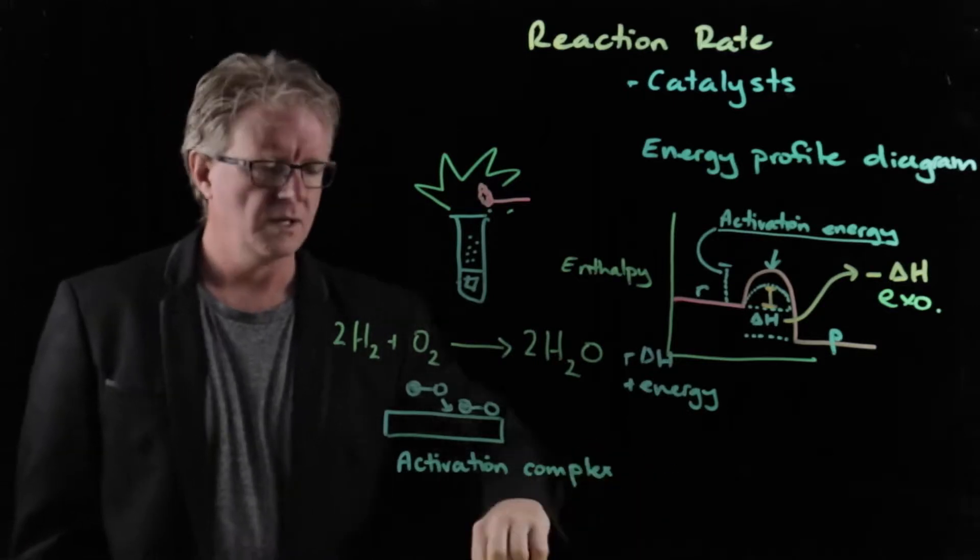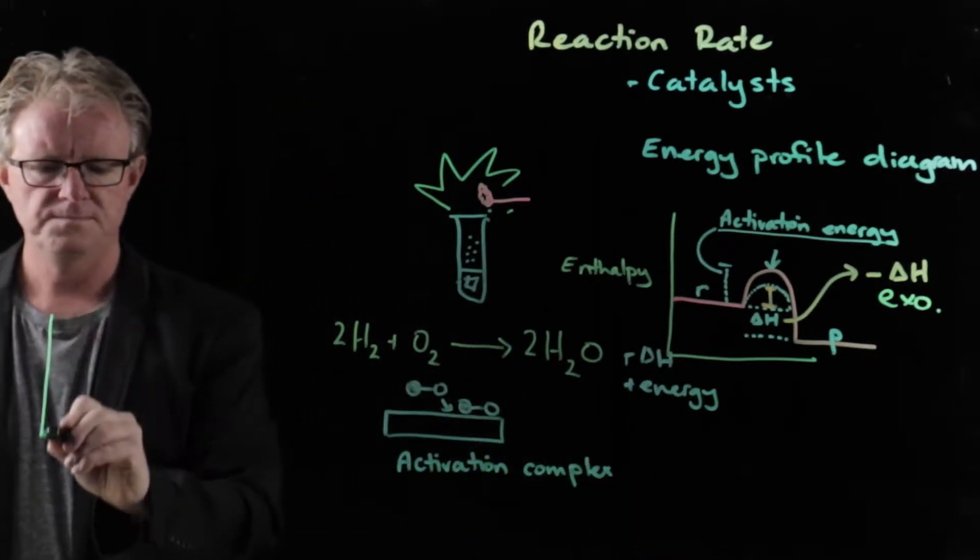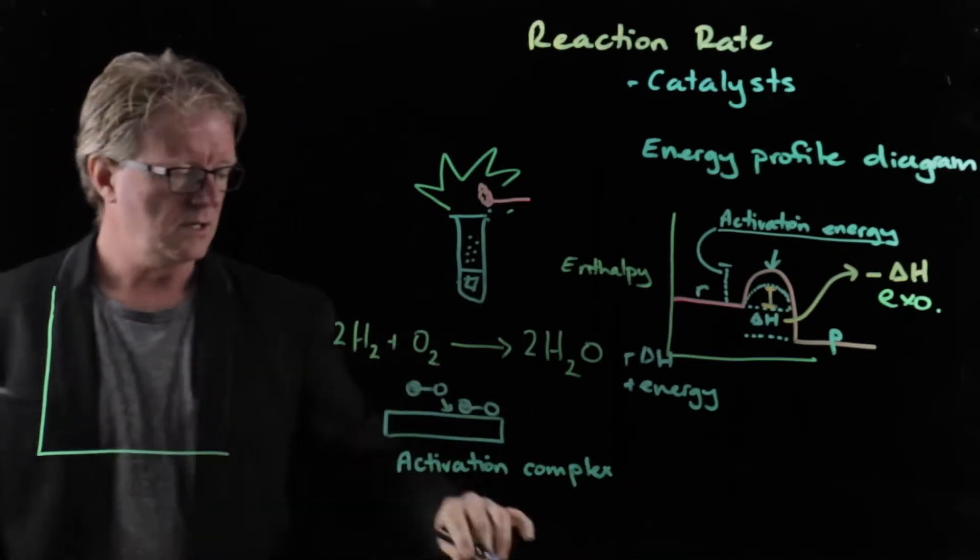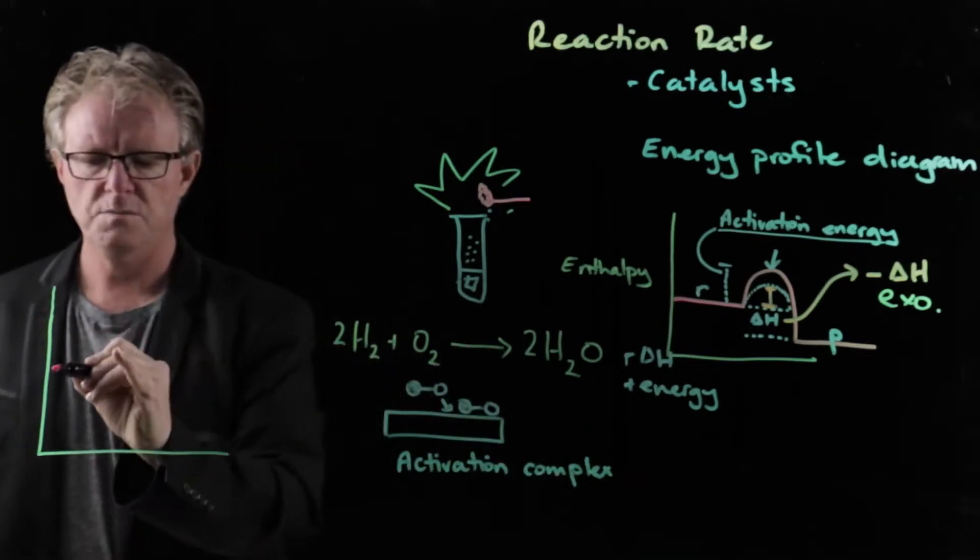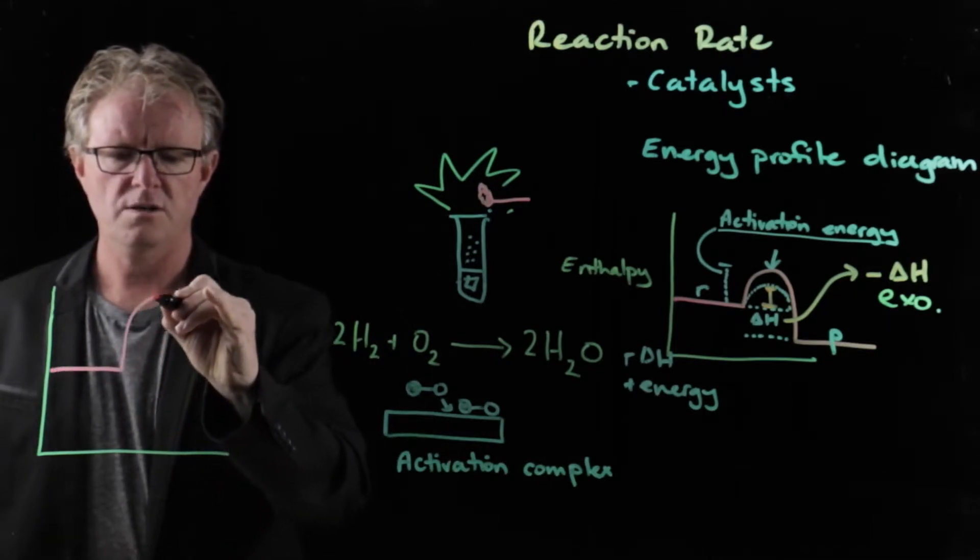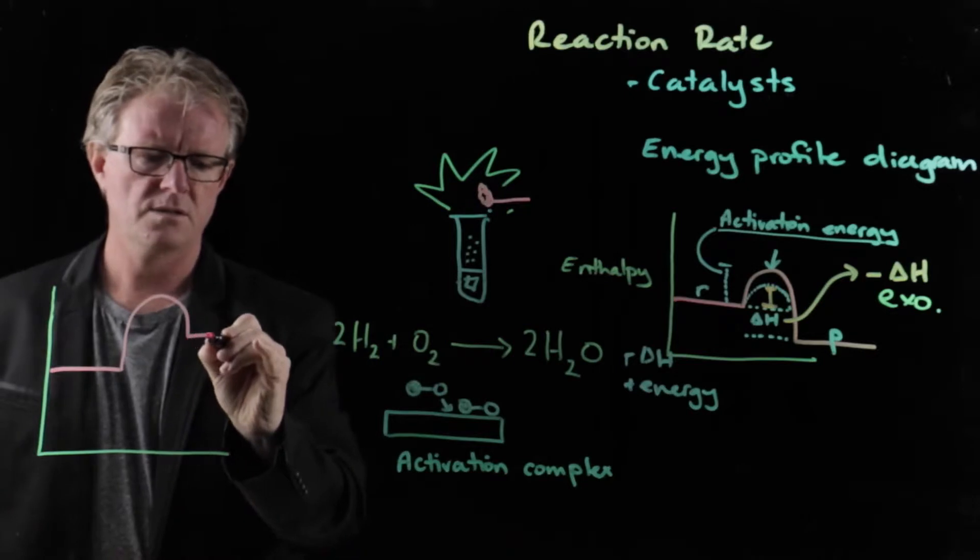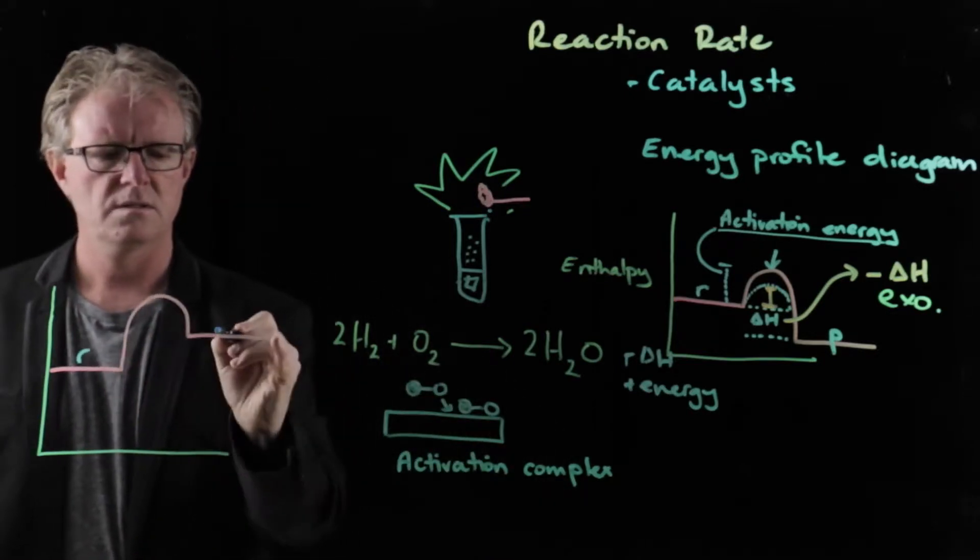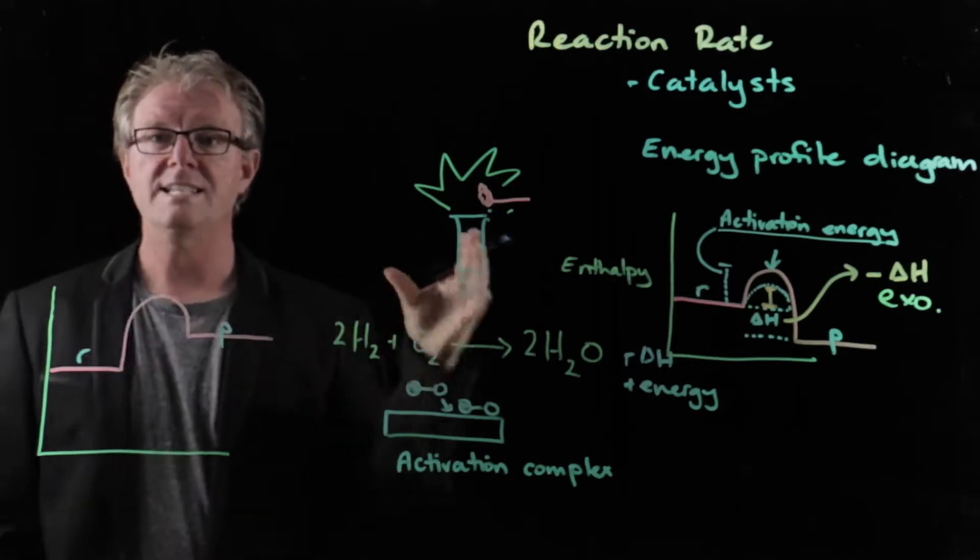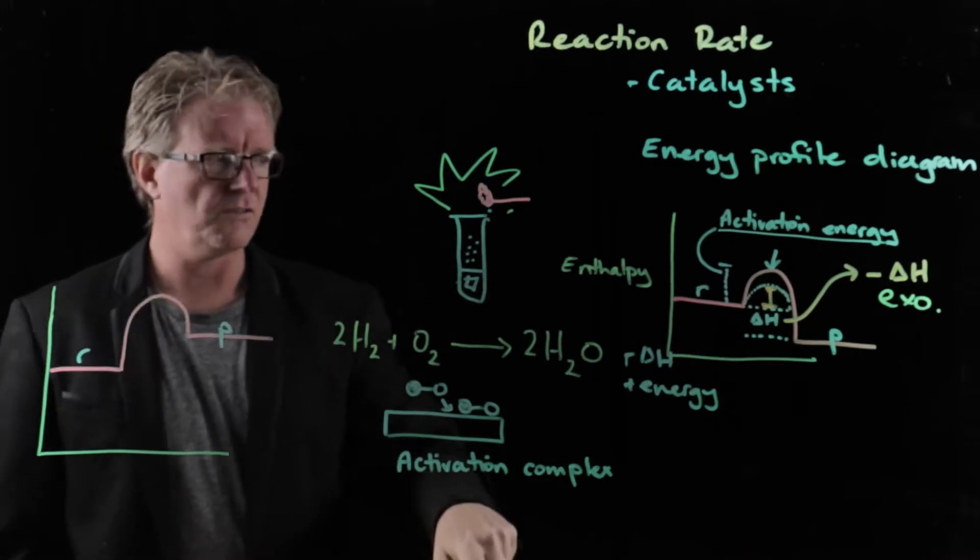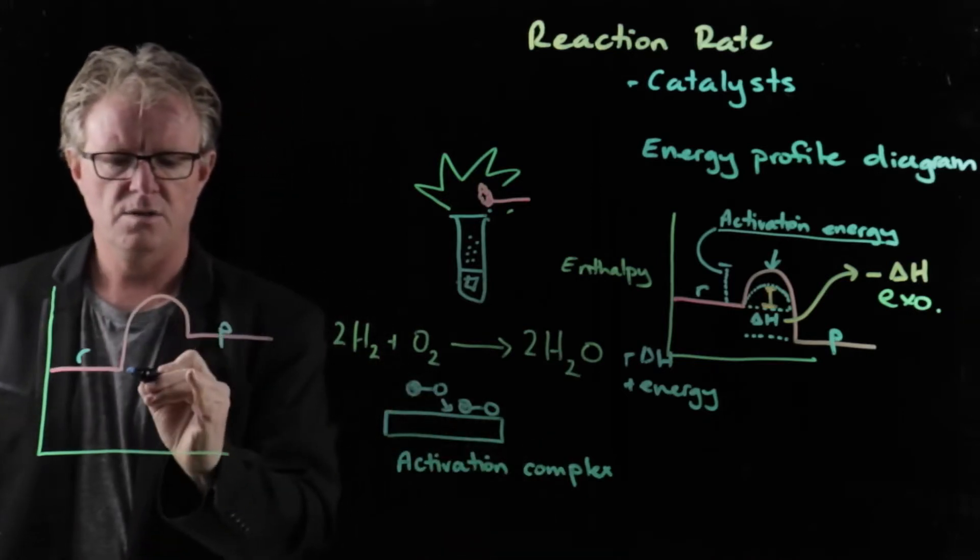Let's do one for endo. So if I do endo over here. So the reactants would be here. Then it needs a certain amount of energy goes up. And this time the products are higher than the reactants. In other words, energy is needed from the surroundings to go into the system and lift the whole energy content of the system up.